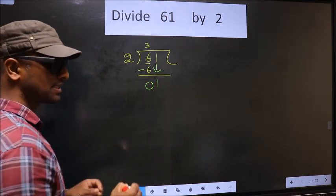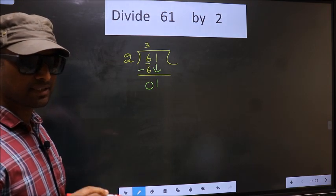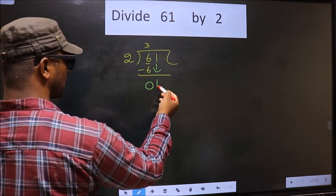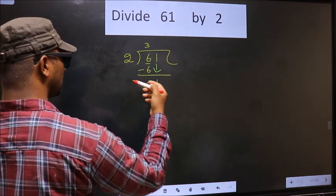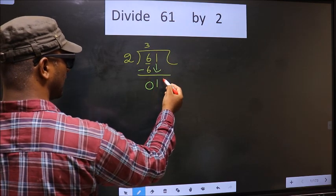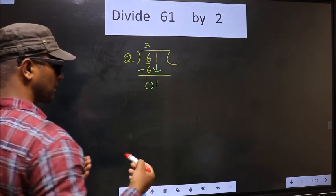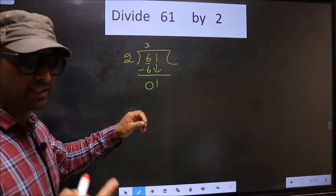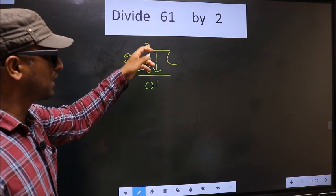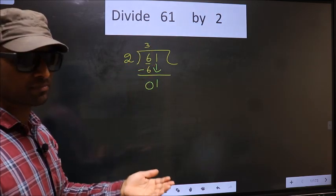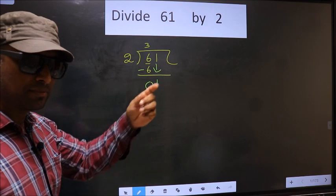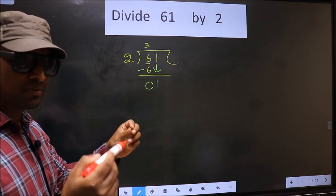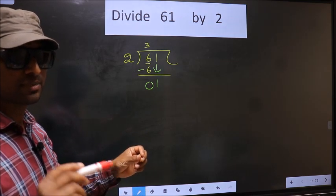Now here is where the mistake happens. And the mistake is this. Here we have 1. Here 2. 1 smaller than 2. So what many do is they put a dot and take 0 here, which is wrong. Just now you brought the number down, and in the same step, you cannot put a dot and take 0 here. I repeat. Bringing the number down and putting a dot and taking 0, both at the same step, you are not supposed to do.